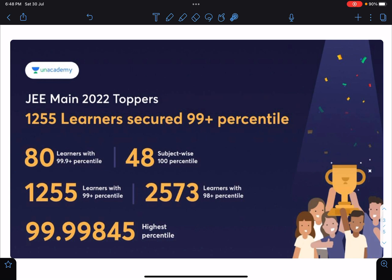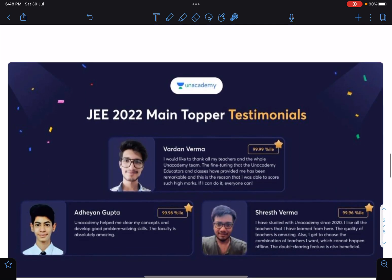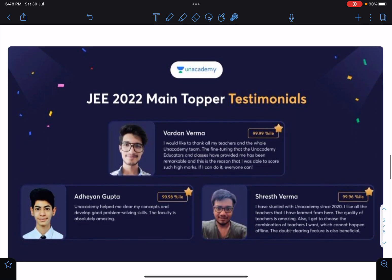In individual subjects there are 48 students with 100 percentile and the highest percentile is 99.99845 by Vardhan Varma. These are the students and luckily all three are my students—Vardhan Varma, Aden, and Shresth Varma. There are many more.